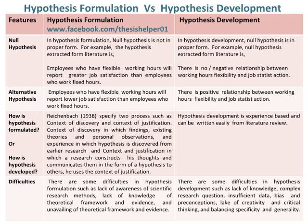How is a hypothesis formulated? Reichenbach in 1938 specified two processes: context of discovery and context of justification. In the context of discovery, findings, existing theories, personal observations, and experience are used — the hypothesis is discovered from earlier research. In the context of justification, a researcher constructs and communicates their thoughts in the form of a hypothesis to others.